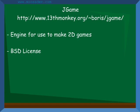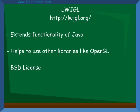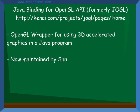Some libraries, engines, and SDKs used specifically with Java are: JGame, a game engine for creating 2D games that uses the BSD license. LWJGL, or the Lightweight Java Game Library, is meant to extend the functionality of Java to allow developers to use other libraries such as OpenGL, and also uses the BSD license. JOGL is a wrapper for OpenGL allowing 3D accelerated graphics, now maintained by Sun under the name Java Binding for OpenGL.